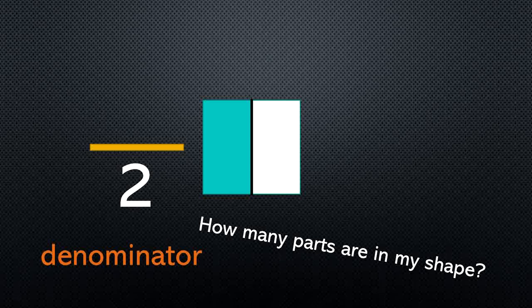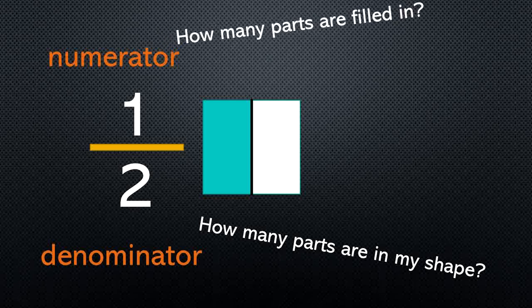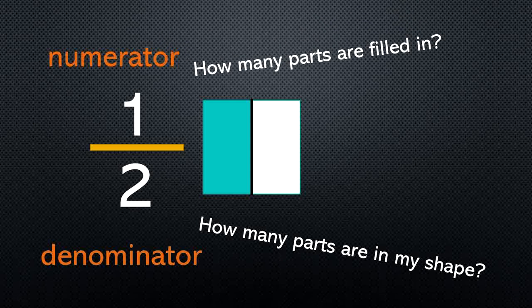There are two parts in this shape — one on the left and one on the right. The number on the top for this fraction is going to be 1. The name of our top number is the numerator. That big fancy word is just telling us how many parts are filled in. I have one part filled in, so I have the number 1 on the top. The way we read this fraction is 1 half.